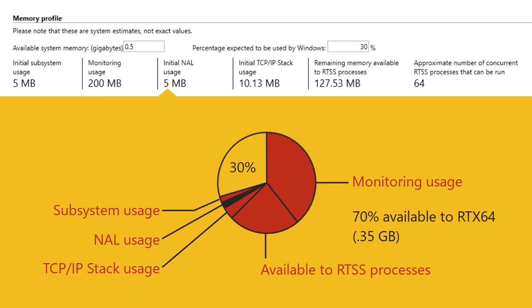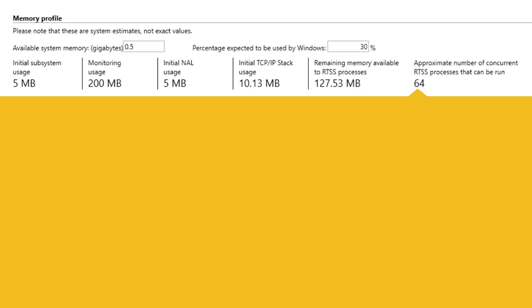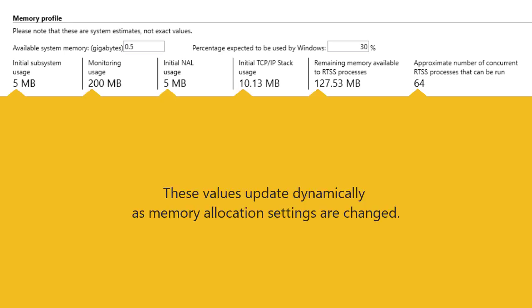The memory profile displays initial local memory usage information for the RTX 64 subsystem, monitoring when enabled, network abstraction layer, and TCP/IP stack. It also shows the approximate number of concurrent RTSS processes that can be run.